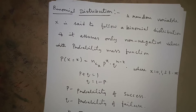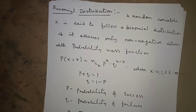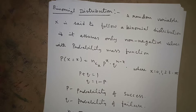Hello everyone. Today I am starting standard distributions. Under standard distributions, we have discrete probability distributions and continuous probability distributions. Under discrete probability distributions, we will have binomial distribution and Poisson distribution. Under continuous distribution, we have uniform distribution, exponential, and normal distribution.